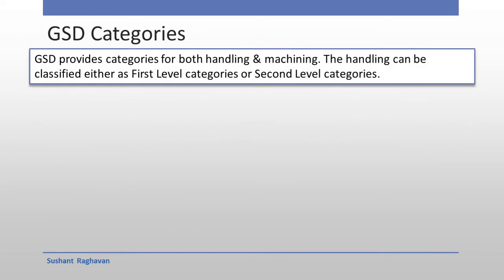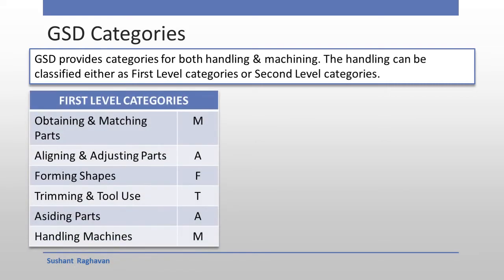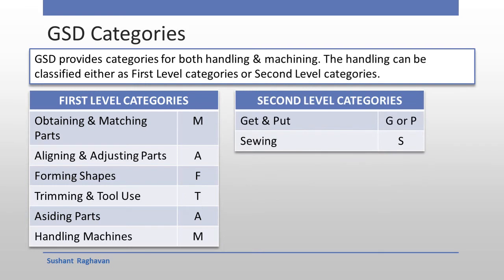GHD Categories: GHD provides categories for both handling and machining. Handling is classified as first level or second level categories. First level categories are: Obtaining and Matching Parts (M), Aligning and Adjusting Parts (A), Forming Shapes (F), Trimming and Tool Use (T), Assiding Parts (A), and Handling Machines (M). Second level categories are: Get and Put (G or P), and Sewing (S).